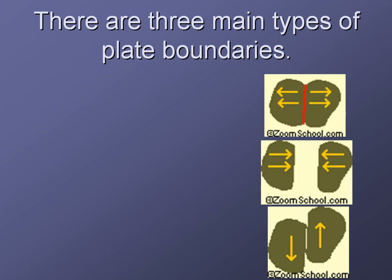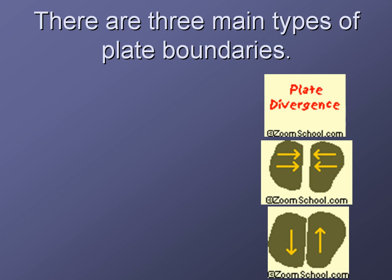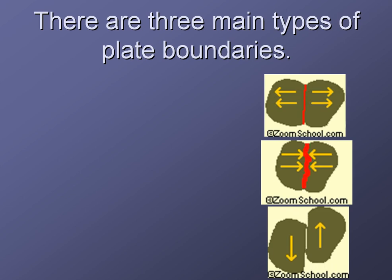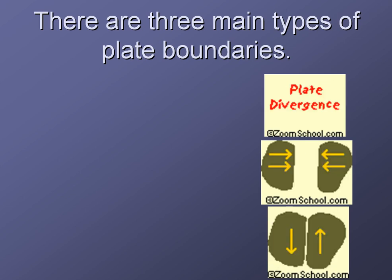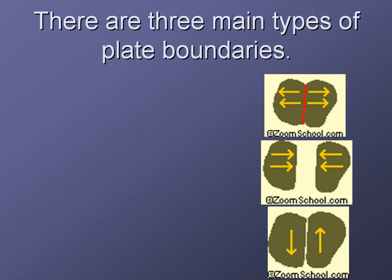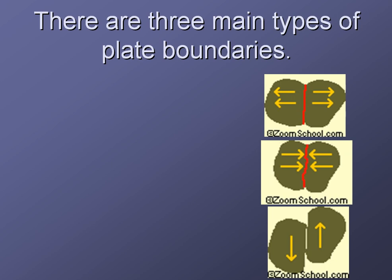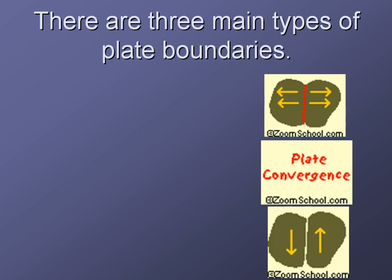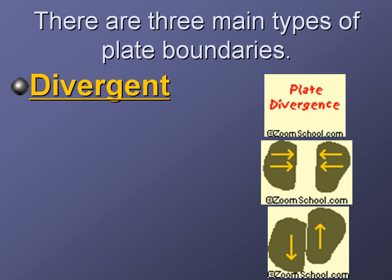What we're going to do today is take a look at how those plates interact, because they're all moving, and they don't all move in the same direction. Sometimes they'll move towards each other, sometimes away from each other, and sometimes they'll just slide past each other. As you can see in these diagrams off to the right, there are three main types of plate boundaries.